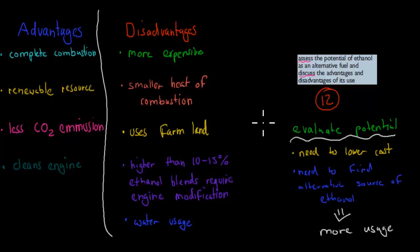Assess the potential of ethanol as an alternative fuel and discuss the advantages and disadvantages of its use. The advantages were that it's complete combustion, it was a renewable resource, less CO2 emission than petrol, and it cleans the engine. The disadvantages were that it was more expensive, had a smaller heat of combustion, uses farmable land, higher than 10 to 15% requires engine modifications, and that we had to use water to grow it. This is the potential, the assessed value. We need to lower the cost, that's really important. We need to find alternative sources of ethanol which don't require farmable land. And if we find this, then the usage will increase.